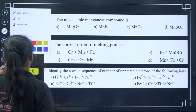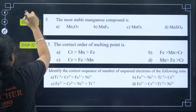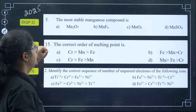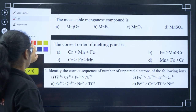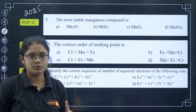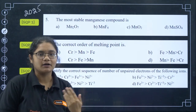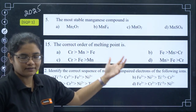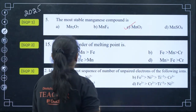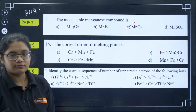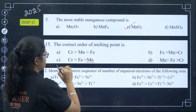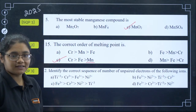These MCQ questions were asked in the 2025 sample question papers. The first question is: the most stable manganese compound is — this was asked in sample question paper 1. You can expect one MCQ from this particular chapter. The most stable one is MnO2. Next, the correct order of melting point — we know that manganese has the least melting point, so definitely option number C.